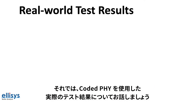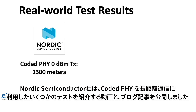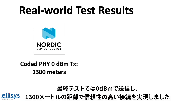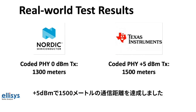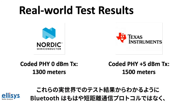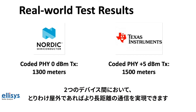Now let's talk about some real-world test results for Coded PHY. Nordic Semiconductor published both a video and a blog post showcasing tests of Coded PHY for long-range communication. In their final test they achieved a reliable connection at a range of 1300 meters transmitting at 0 dBm. Texas Instruments also published a video and article showcasing their tests, achieving a range of 1500 meters transmitting at +5 dBm. As these results show, Bluetooth is no longer a short-range protocol — it can achieve longer-range communication between two devices, especially in open environments.